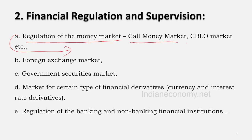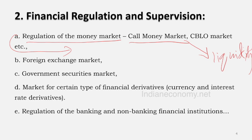One short-term money market is the call money market, where banks can borrow money from one day to 14 days. It is a liquidity market. Another liquidity market is the Collateral Borrowing and Lending Obligation (CBLO) market. These will be covered in later classes.